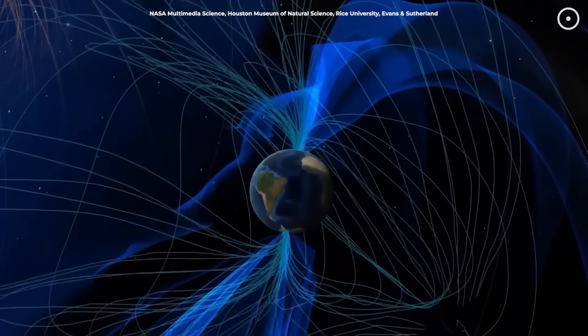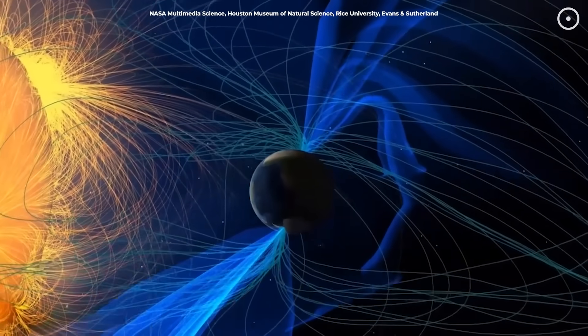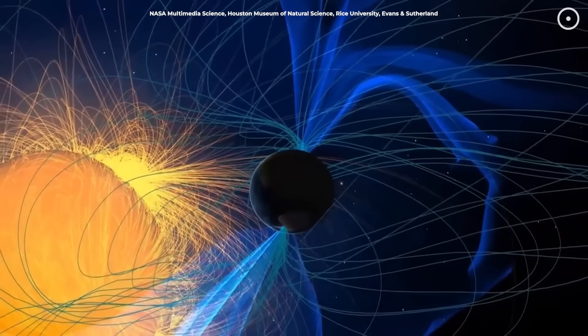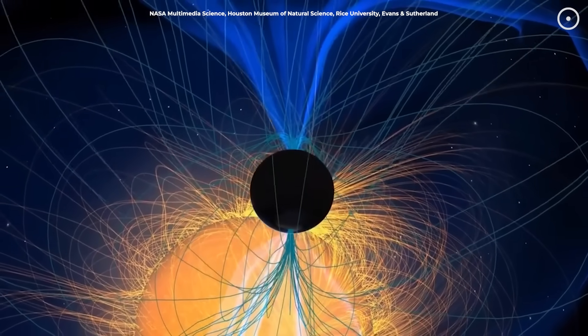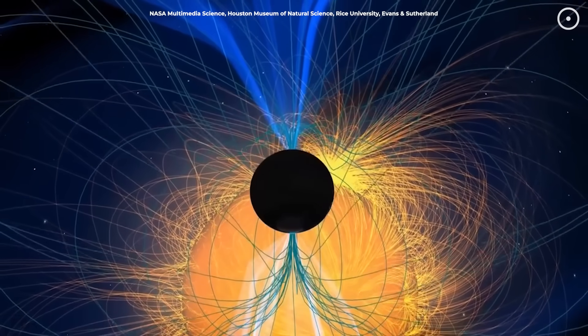First, the good news, we're not heading for a doomsday scenario. Remember, life on Earth has survived hundreds of these reversals before. In fact, there's no evidence that past reversals caused any mass extinctions.